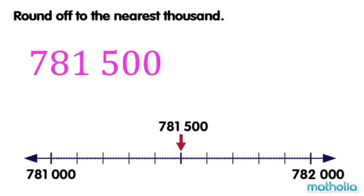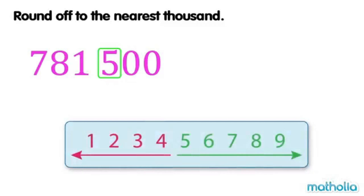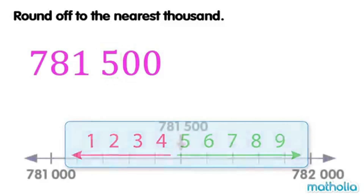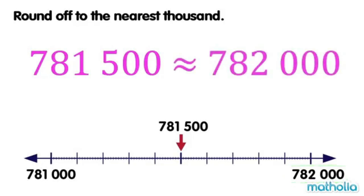Let's round off 781,500 to the nearest 1,000. The digit in the hundreds place is 5. Digits that are 5 or more are rounded up. So, 781,500 is rounded up to 782,000. To the nearest 1,000, 781,500 is approximately equal to 782,000.